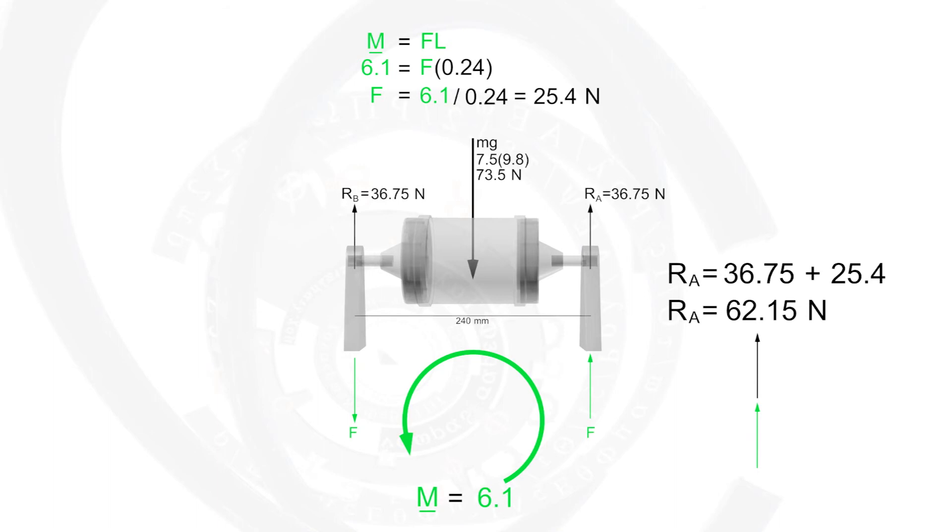Notice that this force will act upward on the right bearing, so it will be added to the previously found static reaction. But the same force will act downward on the left bearing, so it will be subtracted from the static reaction.